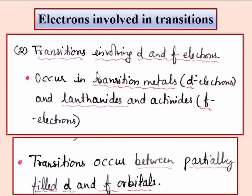Now we will see the second category: electronic transitions involving D and F electrons. D-electron transitions occur in transition metals because they are D-block elements. F-electron transitions occur in lanthanides and actinides because they are F-block elements. These transitions require partially filled D or F orbitals, meaning unpaired electrons must be present. The electron transitions between lower and higher energy levels within these orbitals.